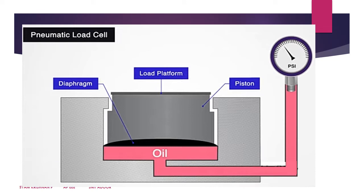Hydraulic and pneumatic types function similarly. As shown in the figure, there is a load platform with a piston and a diaphragm. Some oil is present inside. For the hydraulic structure, when we put a weight on the load platform, the weight presses on the piston and diaphragm, causing elastic deformation in the oil level. The oil level change is then read using a meter.